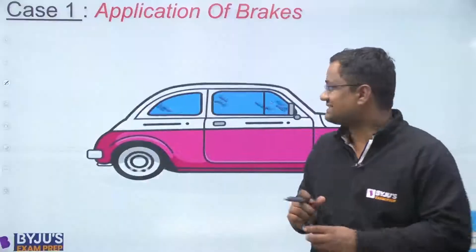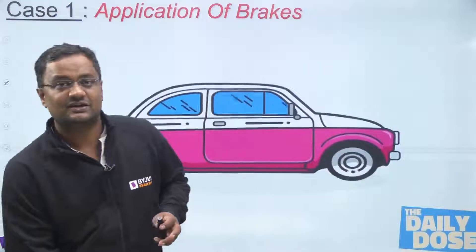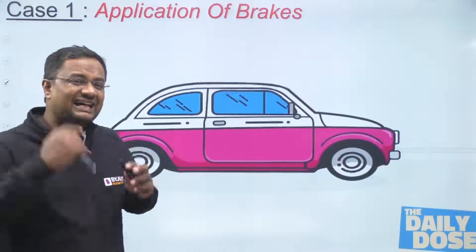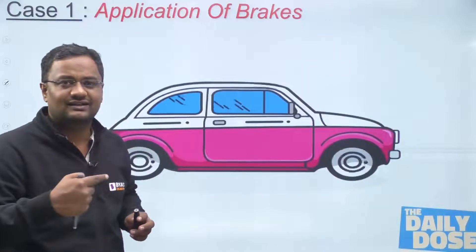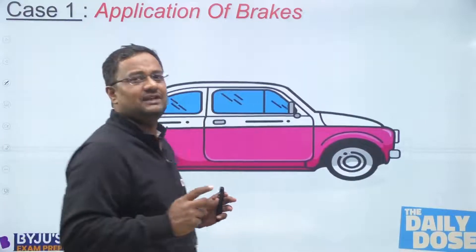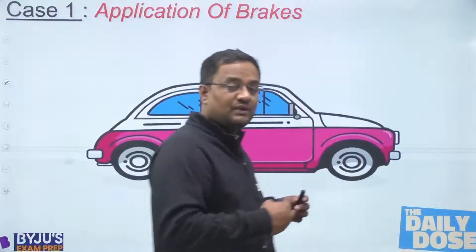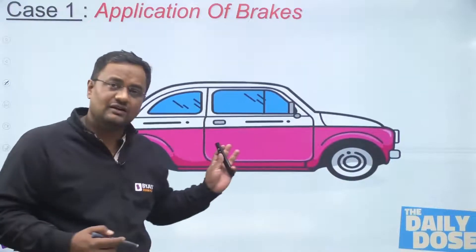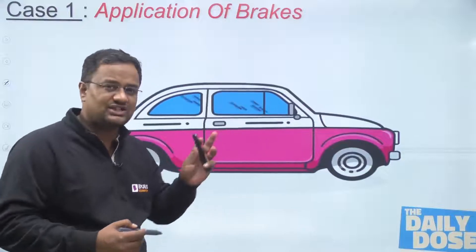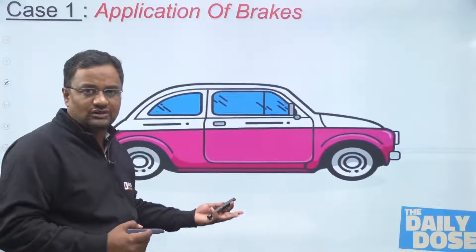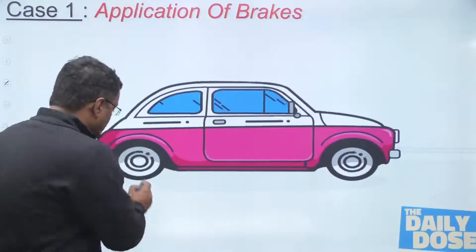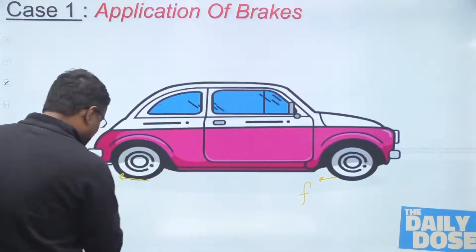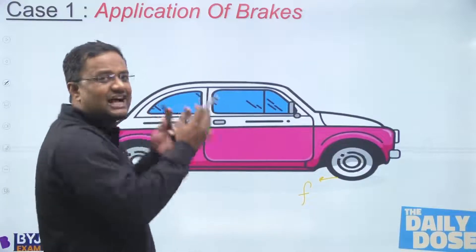Case one is application of brakes. When brakes are applied on a moving vehicle, the tire is not rotating — it is skidding. It is not rotating, so with respect to the ground, it is moving forward with no rotation. So with respect to ground, the relative motion is forward, and friction will be backward on both tires. This is case one, as we also study in highway stopping sight distance.